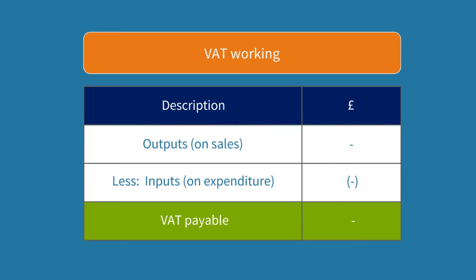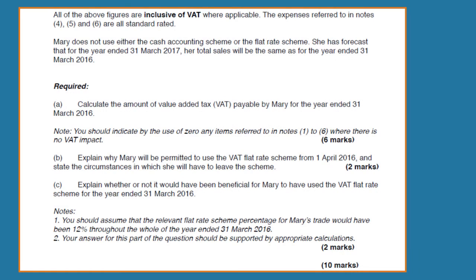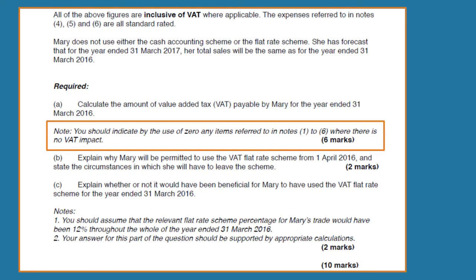Remember outputs is VAT on sales and inputs is VAT on expenditure. Now take a look at the note below the requirement. It says you should indicate by the use of a zero any items referred to in notes one to six where there is no VAT impact. This means you should include all items in your answer even if the result is zero, as it is usually worth half a mark.